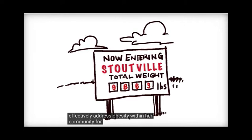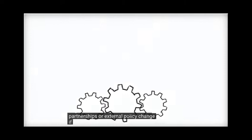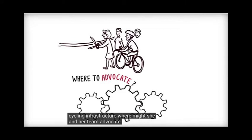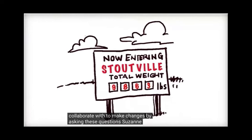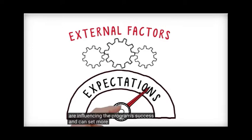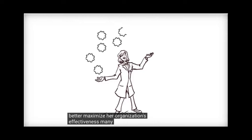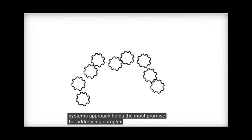For example, in addition to recommendations for improving the program, the results of the evaluation might indicate opportunities for new partnerships or external policy change. If her community has poor walking and cycling infrastructure, where might she and her team advocate, or who could they collaborate with to make changes? By asking these questions, Suzanne is finding that using a systems approach helps her focus on the broader issue of obesity in her community instead of a single program in her organization. She gains a better understanding of what external factors are influencing the program's success and can set more reasonable expectations of what it can accomplish. She's also learning what needs to change both within and outside of the program to better maximize her organization's effectiveness. Many now believe that a systems approach holds the most promise for addressing complex health problems like obesity, which is not only good for Suzanne, but good for everyone.